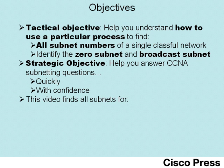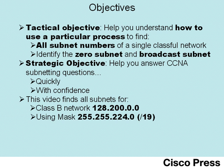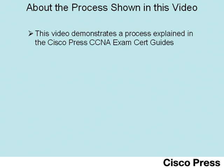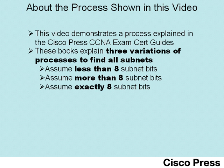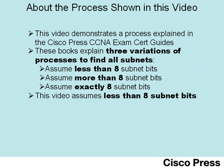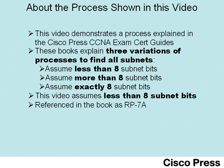This video shows how to find all the subnets of Class B network 128.200.0.0 using mask 255.255.224.0. For those using the Cisco Press books, this video demonstrates one of three processes for finding subnets of a single network. The first assumes less than eight subnet bits, the second assumes more than eight subnet bits, and the third assumes exactly eight subnet bits. This video demonstrates the process assuming less than eight subnet bits — referred to in the book's summary appendix as process RP7A.